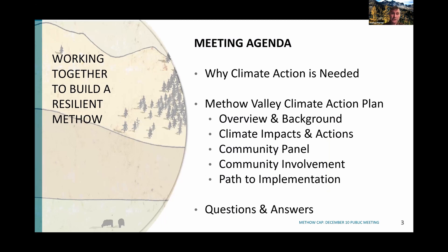So let's take a brief look at our agenda this evening. First, we will hear why this climate action is needed, hearing from Amelia Marchand of the Confederated Tribes of the Colville Reservation, from our mayors of Pateros, Twisp, and Winthrop, and from two of our local youth climate leaders. Then we will dive into the background and process for creating a Methow Valley climate action plan, review climate impacts, share recommended climate actions, and hear from a community panel of task force members. We will also hear from Tom Donnelly from FEMA about the partnership that FEMA, the Environmental Protection Agency, and the Federal Reserve Bank of San Francisco have teamed up on to help communities adapt to climate change, followed by a question and answer session.